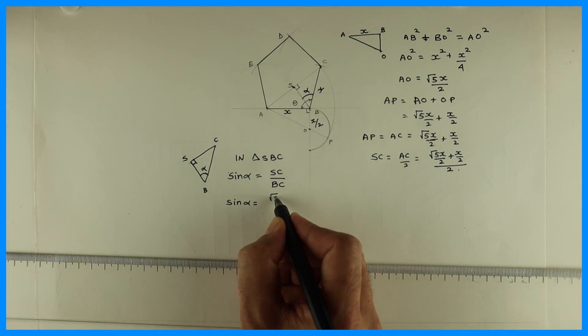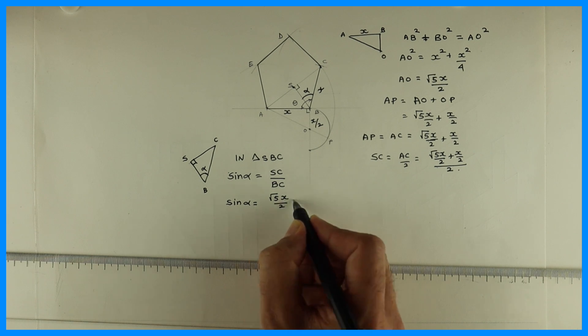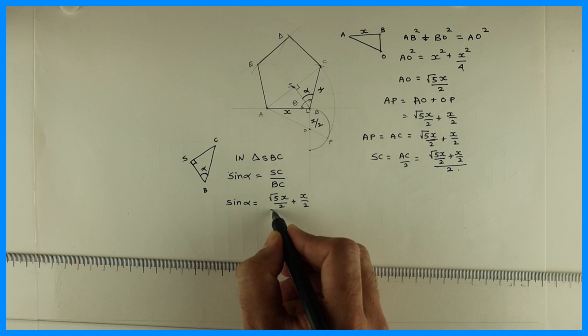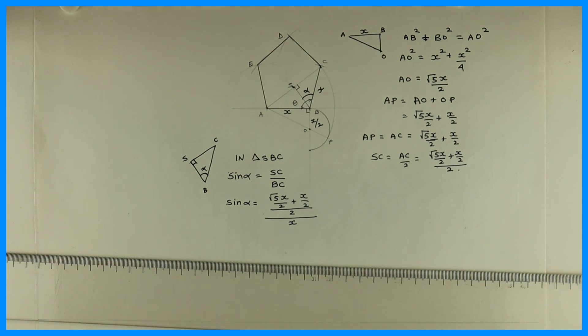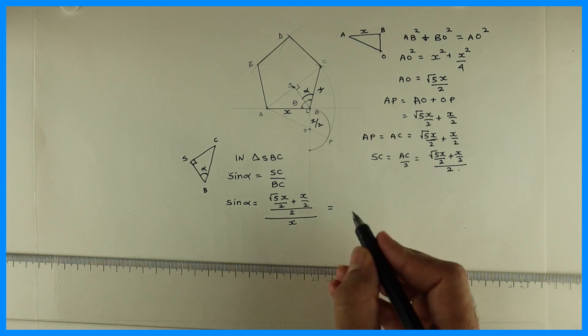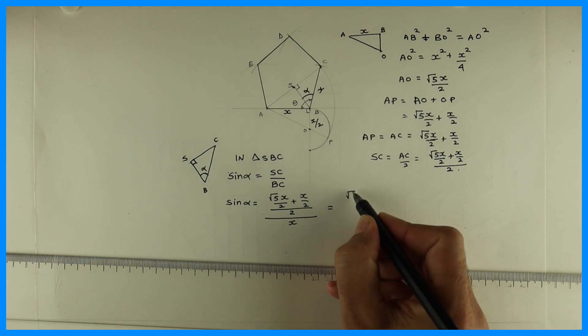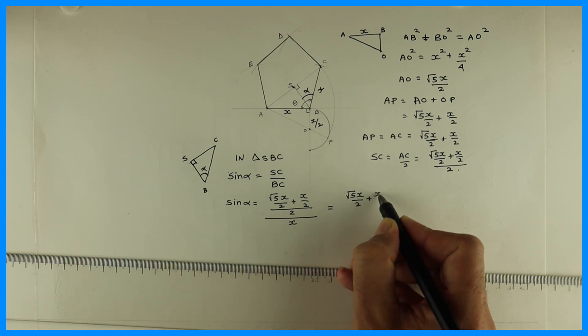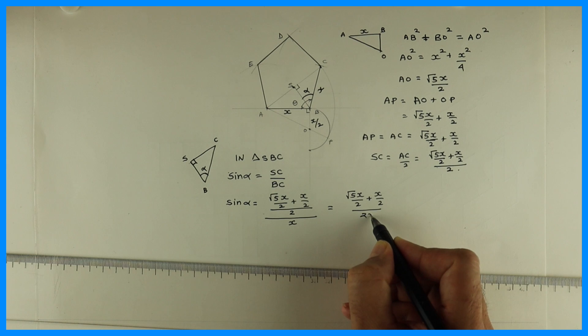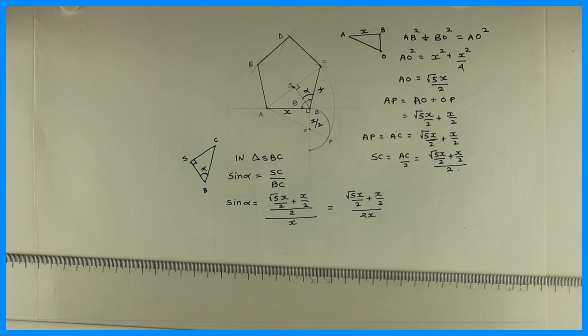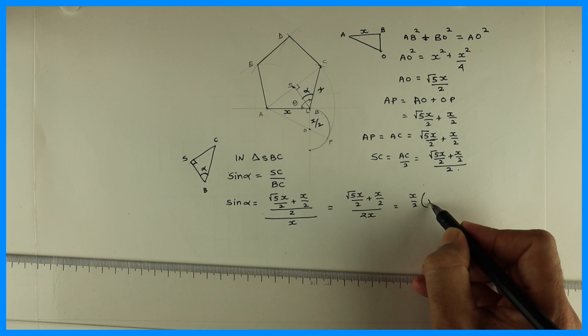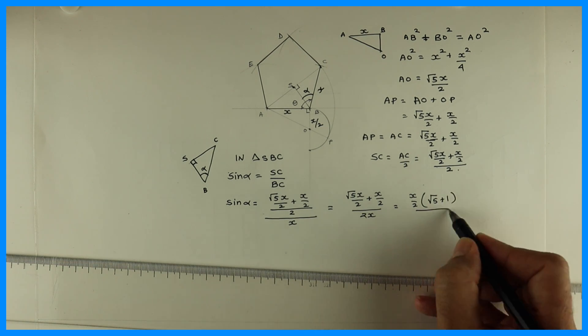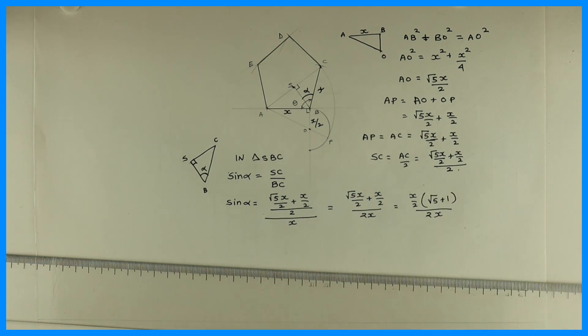You write the value of SC, under root 5 X by 2 plus X by 2 upon 2, full divided by BC. BC is how much? X. So this will be under root 5 X by 2 plus X by 2 upon 2 X. I can take X by 2 common. Under root 5 plus 1 upon 2 X. X X will get cancelled.